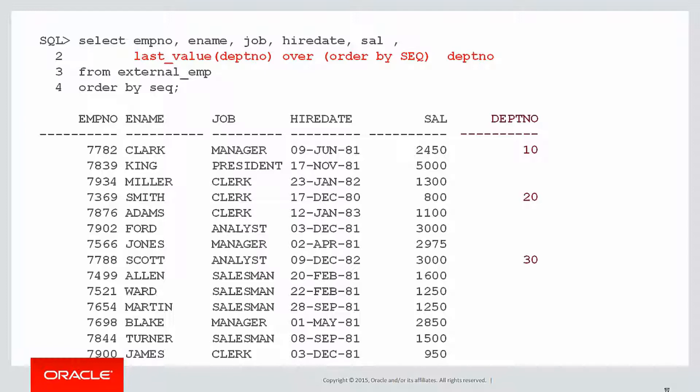But nothing happens. We still get 10, 20, 30, only in those three places. Last_value didn't seem to pick up the last value encountered. Why is that the case?